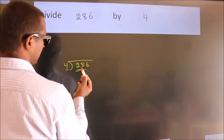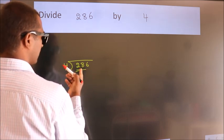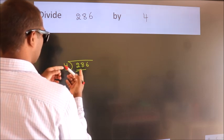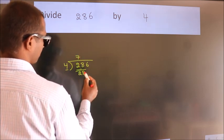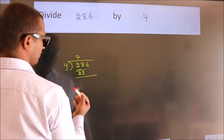When do we get 28 in the 4 table? 4 sevens are 28. Now we should subtract. We get zero.